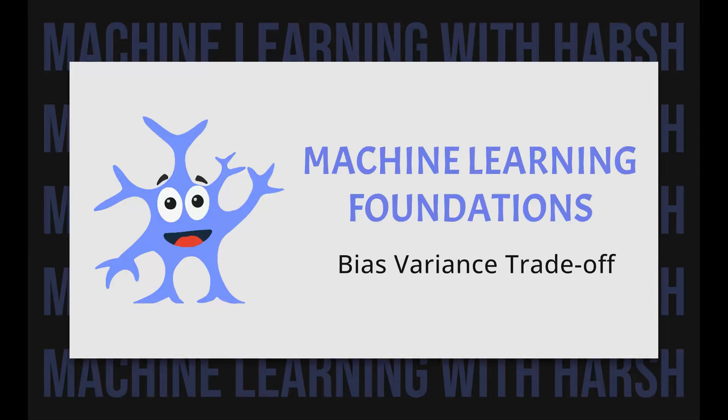Hello and welcome to the fifth video in the machine learning foundation series. Today we will discuss the bias-variance trade-off. The bias-variance trade-off is a central concept in the frequentist view of machine learning.